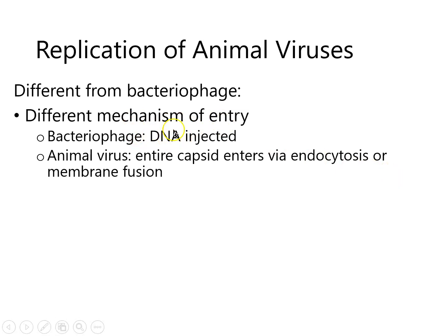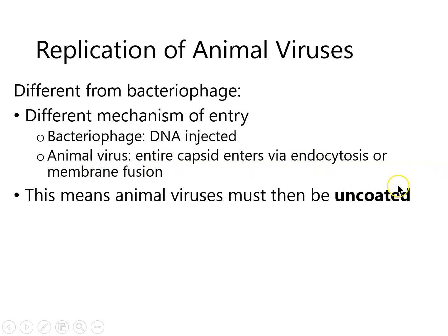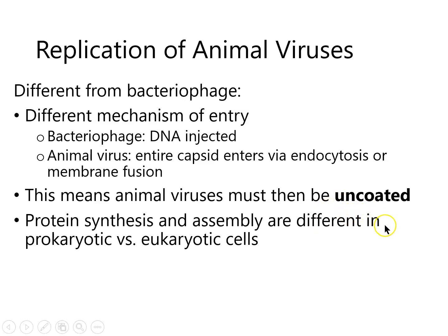Animal viruses replicate differently because they get into the cell in a different way — they can use endocytosis or membrane fusion. That means what gets into the cell is the whole capsid, and it has to be broken open. So animal viruses have to include an uncoating step.